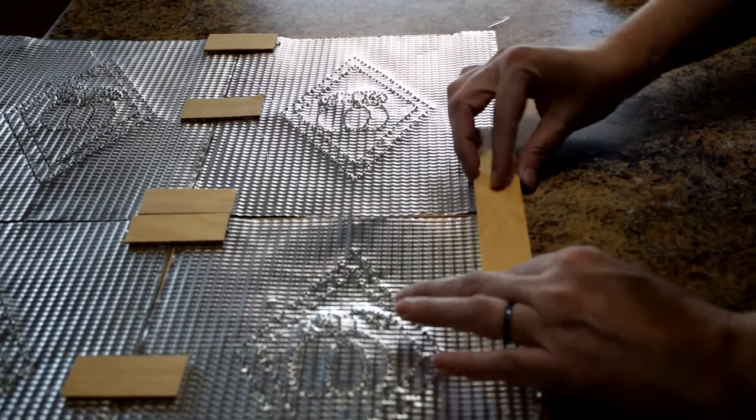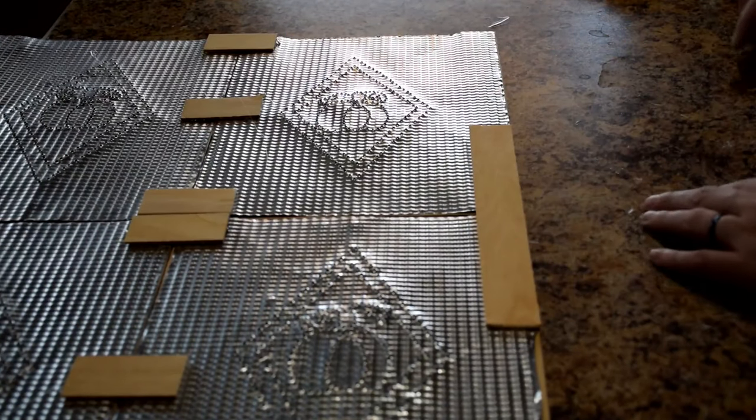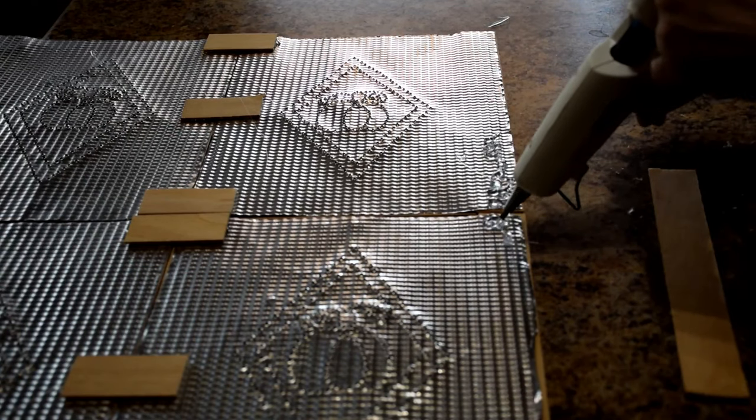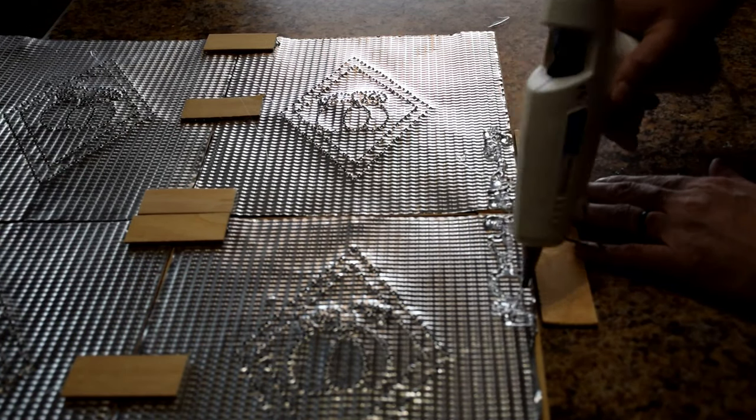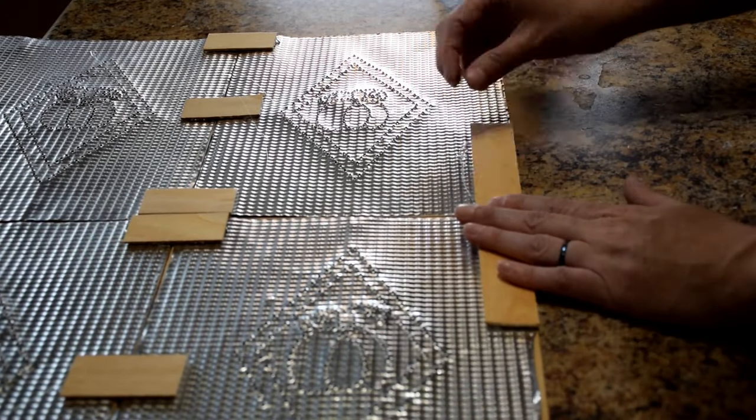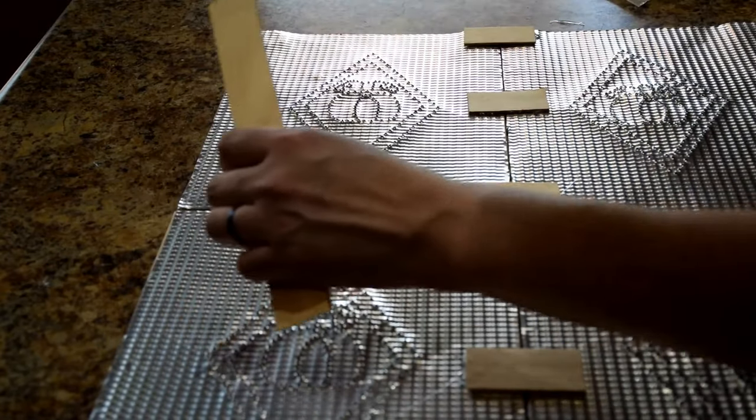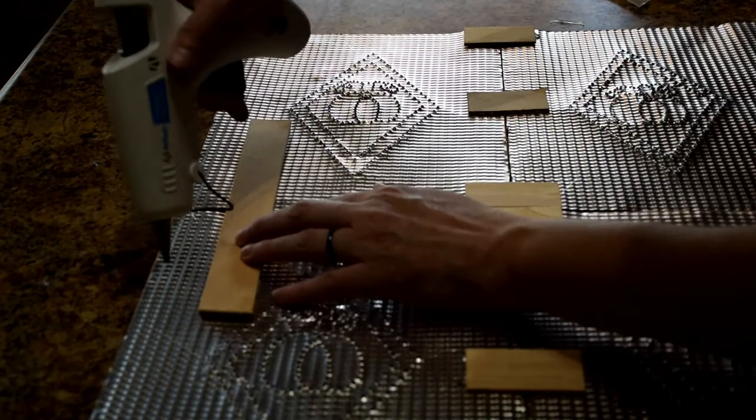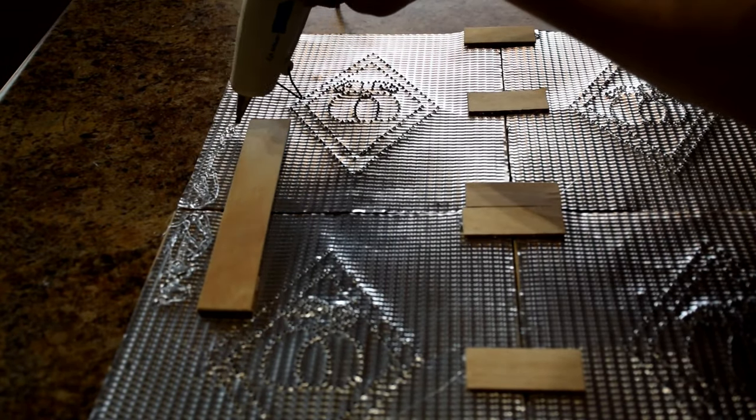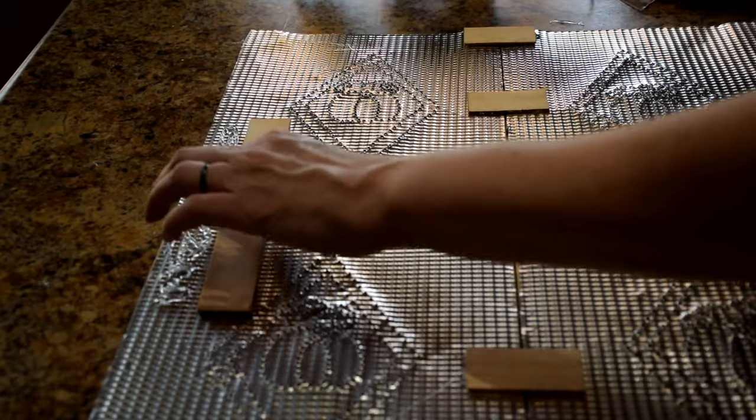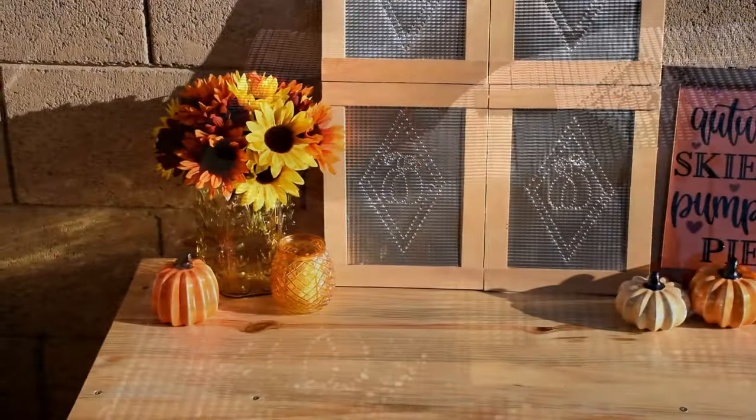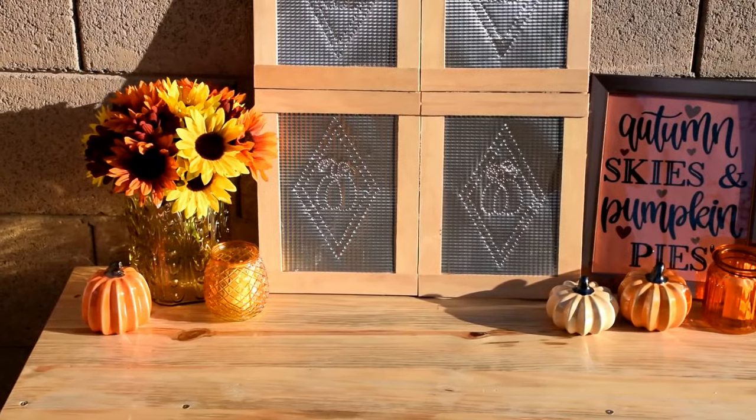Finally, we're going to glue the two larger panels together using the longest pieces of wood that are left. Now, your farmhouse faux punch tin doors are ready to display.